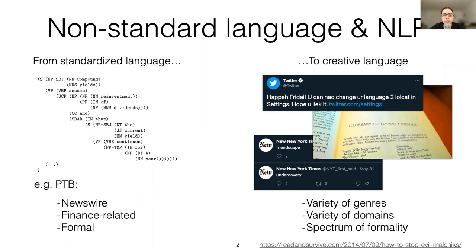Many of those domains are likely to contain linguistic innovation, such as unconventional spellings on Twitter, or made-up words in fiction, or even in the newswire as well, like in the example of the New York Times here.